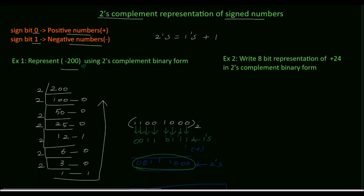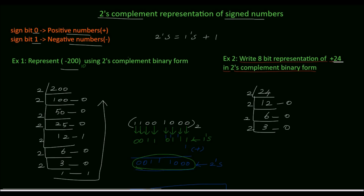Next, Example 2: write the 8-bit representation of plus 24 in 2's complement binary form. First, find the binary equivalent of decimal 24. Divide 24 by 2: quotient is 12, remainder 0. Divide 12 by 2: quotient is 6, remainder 0. Divide by 2: quotient is 3, remainder 0. Divide by 2: quotient is 1, remainder 1. Reading from bottom to top, the binary equivalent of 24 is 11000.